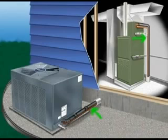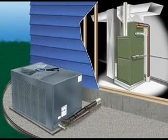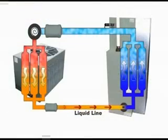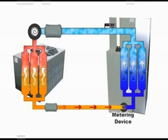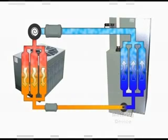The liquid line can also be easily identified as it is the uninsulated tube. After passing through the liquid line, the refrigerant arrives back at the metering device — our starting point in the tour. The refrigerant has now come full circle and is ready to repeat the process.